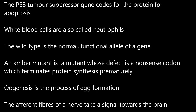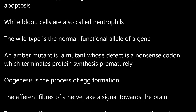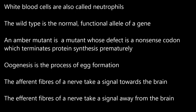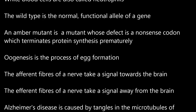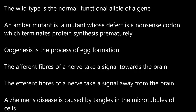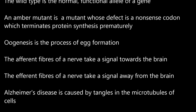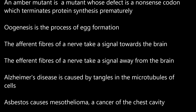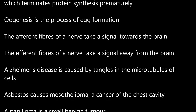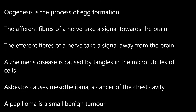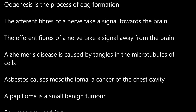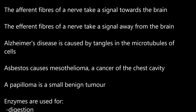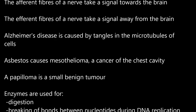An amber mutant is a mutant whose defect is a nonsense codon which terminates protein synthesis prematurely. Oogenesis is the process of egg formation. The afferent fibers of a nerve take a signal towards the brain. The efferent fibers of a nerve take a signal away from the brain. Alzheimer's disease is caused by tangles in the microtubules of cells. Asbestos causes mesothelioma, a cancer of the chest cavity.